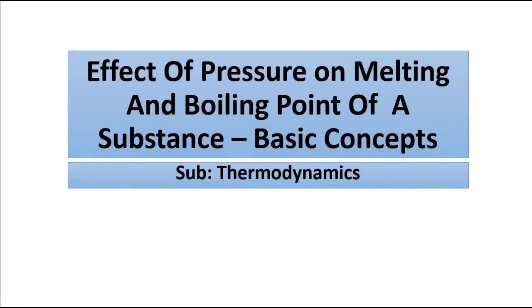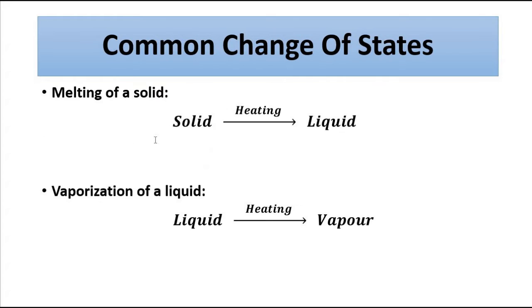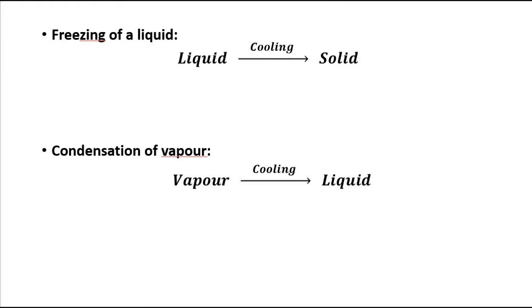Hello friends, welcome to Engineering Tutorial. We'll continue our discussion on thermodynamics. Previously we discussed change of state, the concepts of melting point, boiling point, and latent heat. In this video we are going to discuss the effect of one of the thermodynamic variables — pressure — on the melting and boiling point of a substance. A quick review: change of state is any substance undergoing transition into another state — solid, liquid, gas — including melting, vaporization, freezing, and condensation.